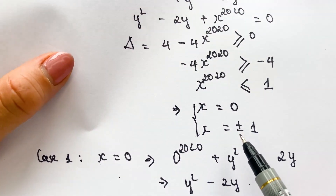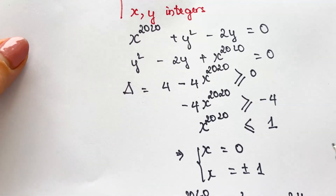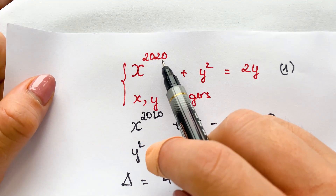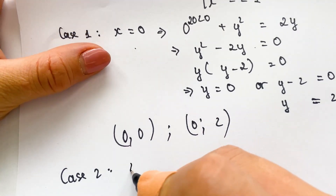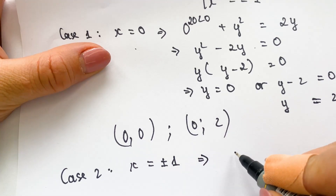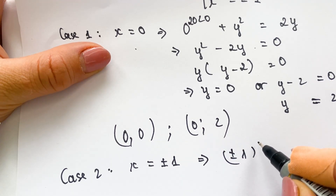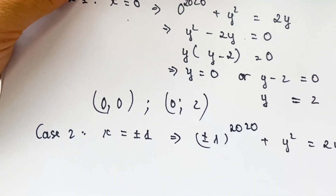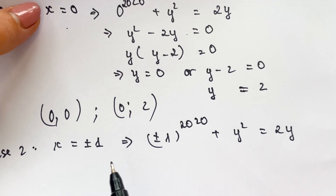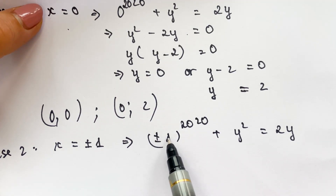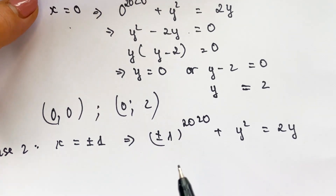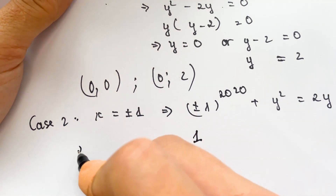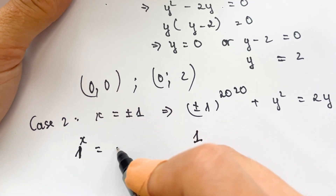For case 2, x equals plus or minus 1. Looking at the original equation, the power 2020 is an even number, therefore x^2020 equals (minus 1)^2020 equals (+1)^2020, which equals 1. So plus or minus 1 to the power 2020 plus y squared equals 2y, and since it's an even power, both give the same value of 1.